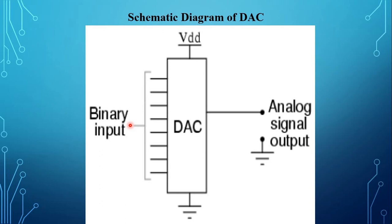A digital to analog converter is a device used to convert a digital code into an analog signal. The analog signal may be current, voltage, or any other form.